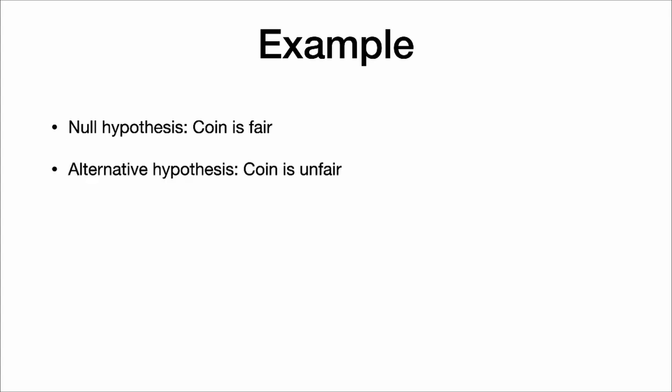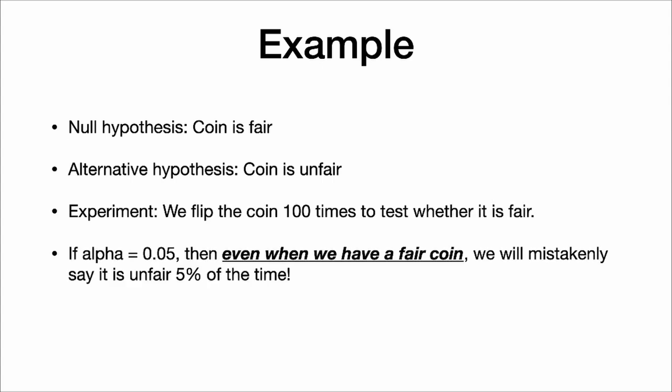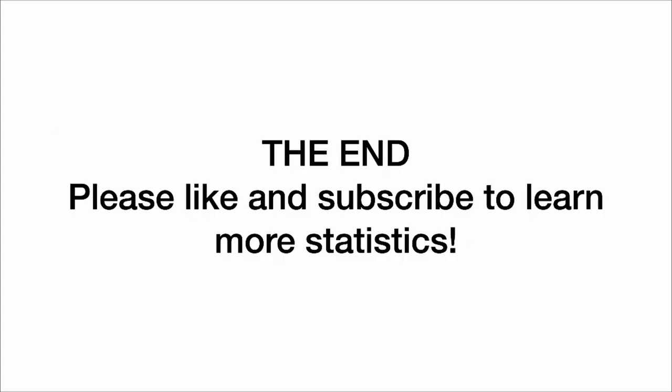Here's a more concrete example. Let's say the coin is fair — our null hypothesis — but our alternative is that the coin is not fair. We flip the coin 100 times to test this. If alpha equals 0.05, even with a truly fair coin, we will mistakenly say it is unfair 5% of the time. We don't need any math to prove that — whenever we set alpha, that is the type 1 error rate. If we thought 5% was too many mistakes, we could choose a smaller alpha, such as 0.01.